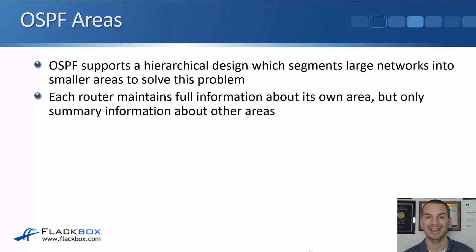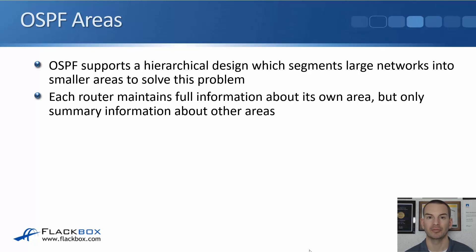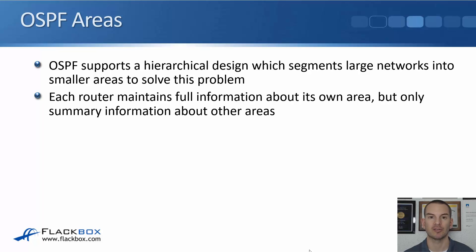To mitigate against this, OSPF supports a hierarchical design which segments large networks into smaller areas. Each router maintains full information about its own area but only summary information about other areas. So routers will have fewer routes in their routing table, and if a link comes up or goes down in another area it won't affect that router.